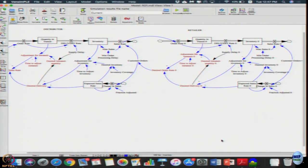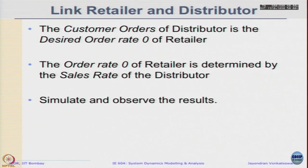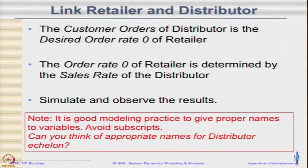The only two links we added were: customer order rate of the distributor equals the desired order rate zero of the retailer, and order rate zero of the retailer is determined by the sales rate of the distributor. It is good modelling practice to give proper variable names and avoid subscripts — you can use names like shipment rate, dispatch rate, or supplier delay for the distributor echelon.